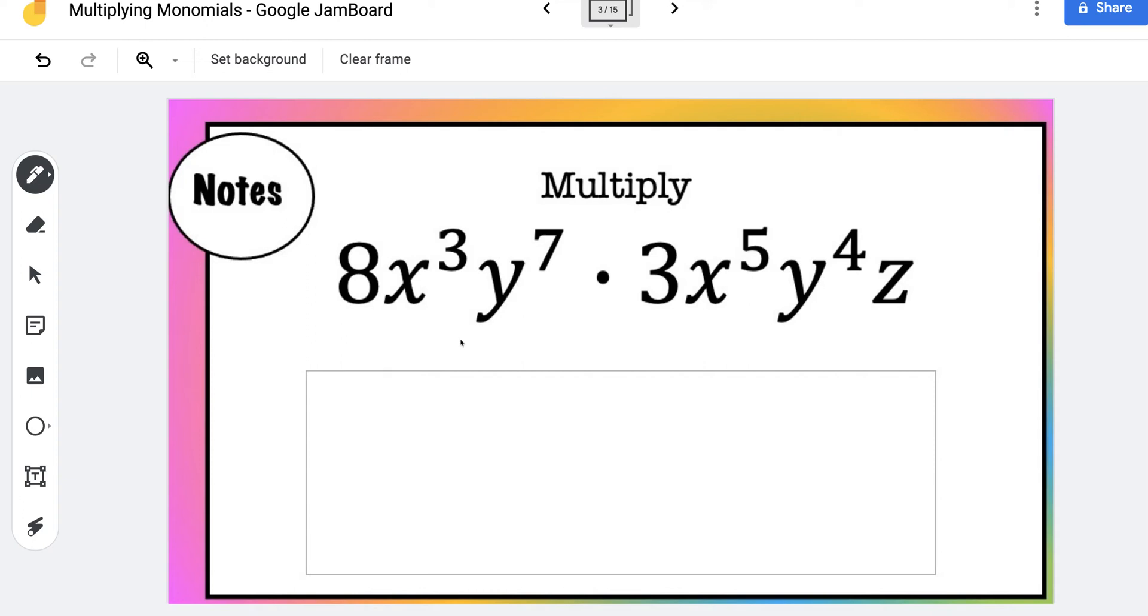Hey everyone, in this problem we're going to multiply 8x cubed y to the 7th times 3x to the 5th y to the 4th z.